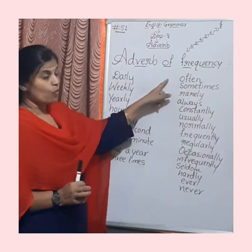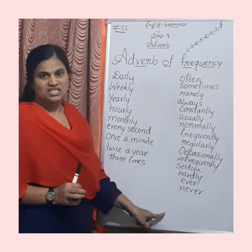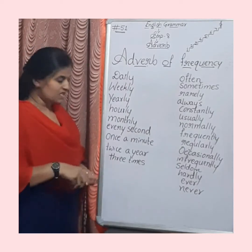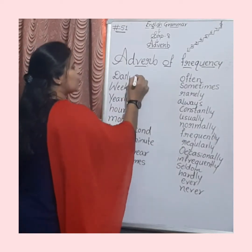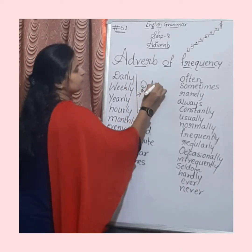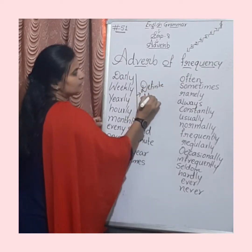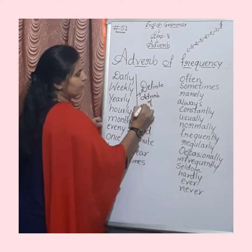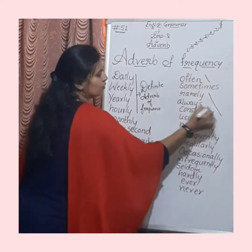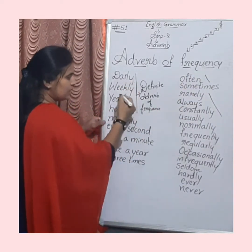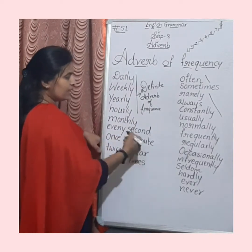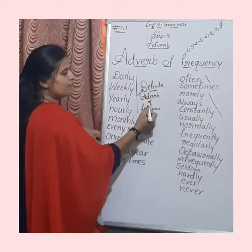So these all you can observe now. Daily, weekly, yearly, hourly, monthly, every second, once a minute, twice a year, three times — all these are considered as definite adverb of frequency.